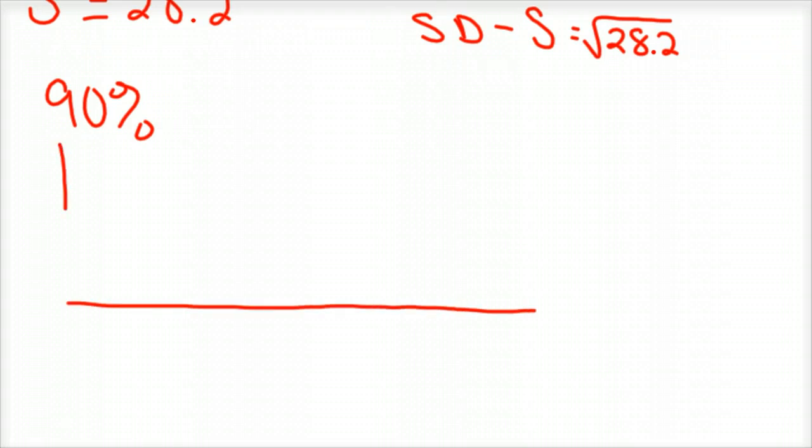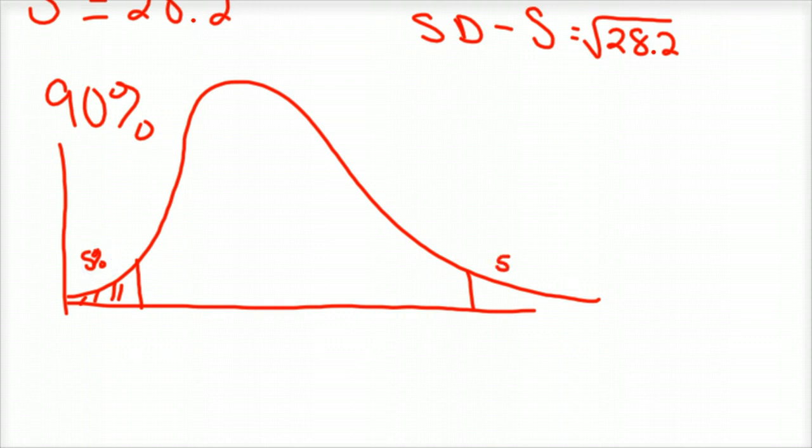So what we have here then, okay, so again, what we have here is we've got 10% of the data is left over in the tails. So here in this area and here over in this area, we'll say we've got 5% over here and 5% over here. And so in the middle here, which is what we're looking for, so we're looking for this middle 90% of our standard deviation. And this is S and S squared.